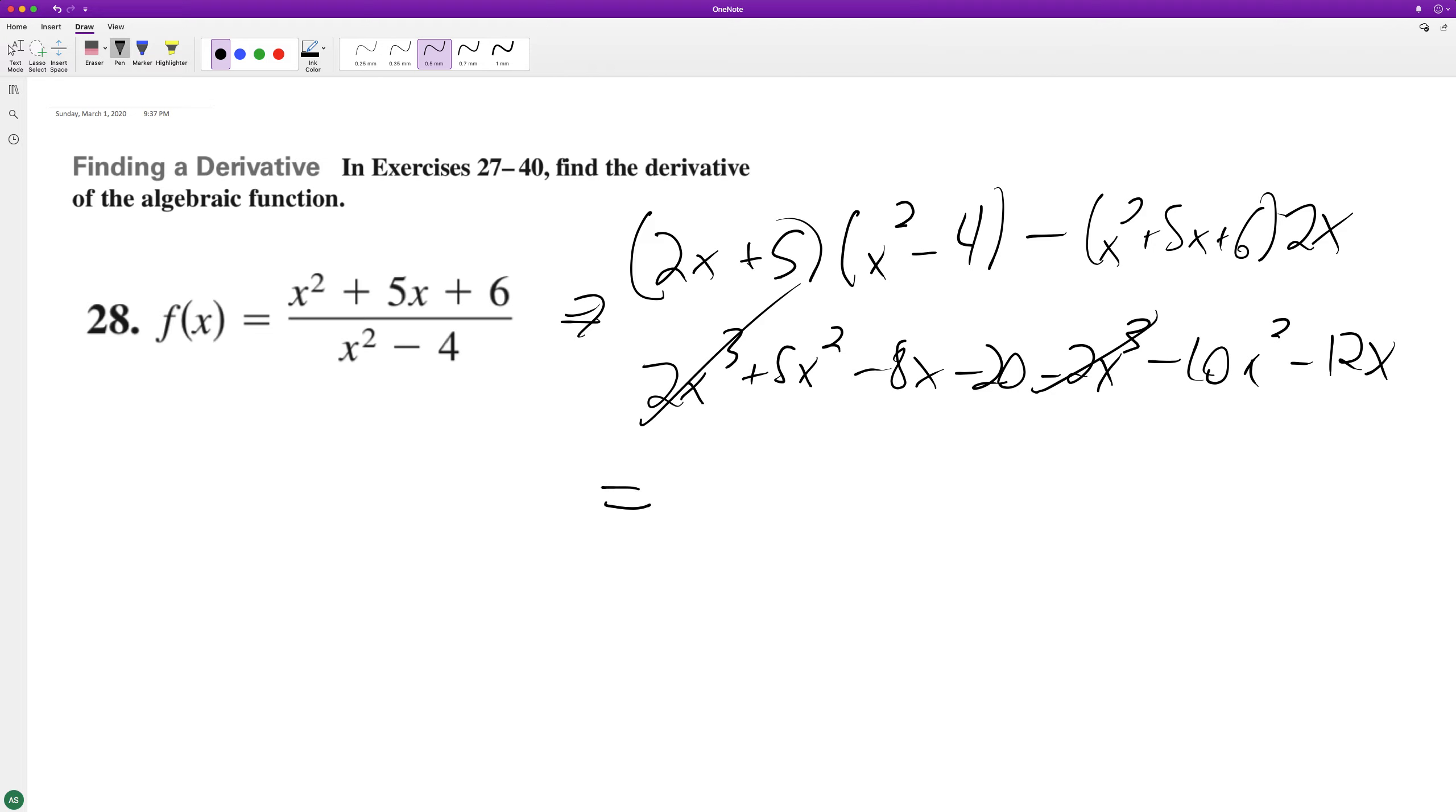Well, this simplifies down to negative 5x squared minus 20x minus 20 all over x squared minus 4 squared.